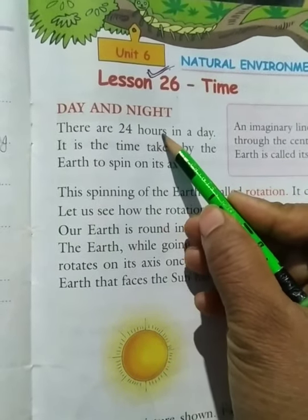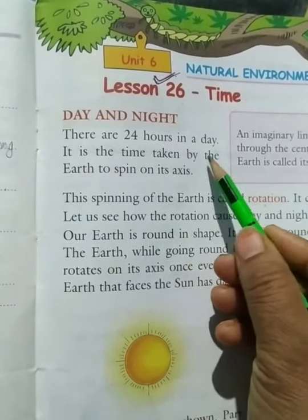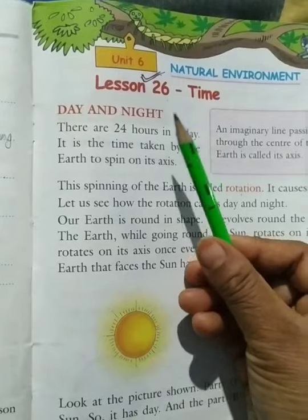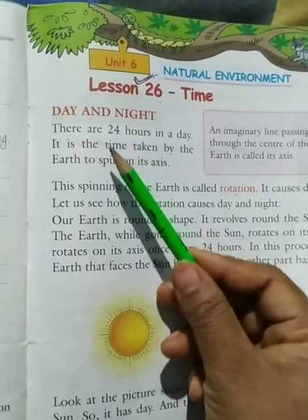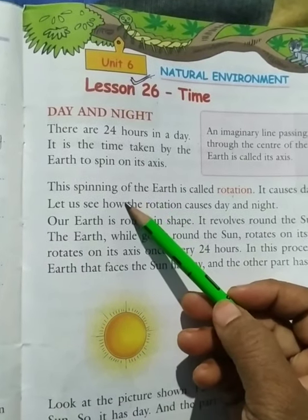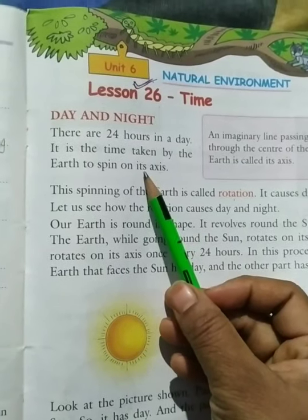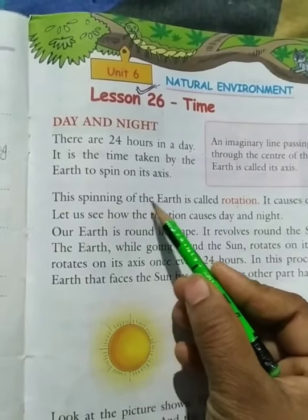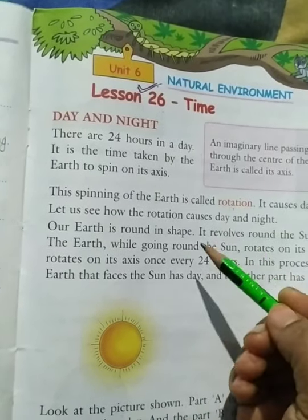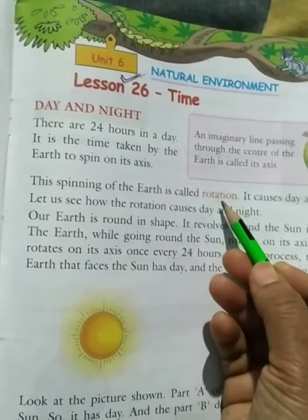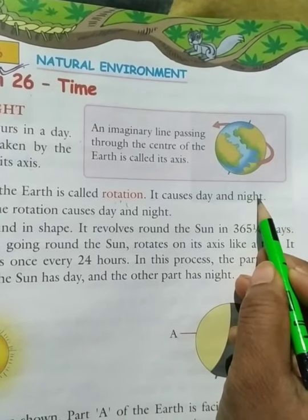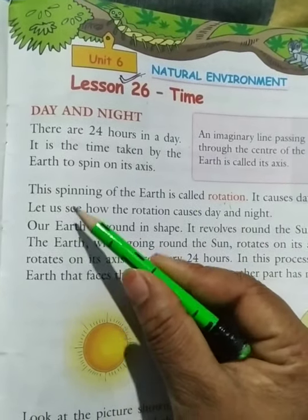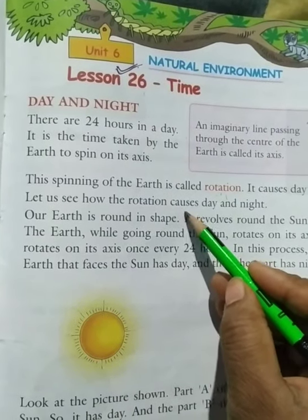There are 24 hours in a day. It is the time taken by the earth to spin on its axis. This spinning of the earth is called rotation. It causes day and night.